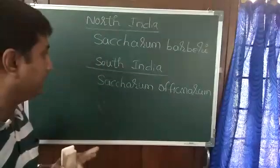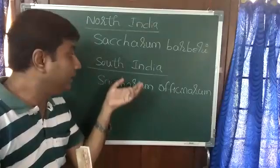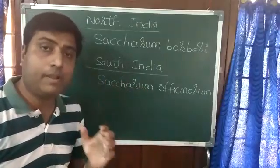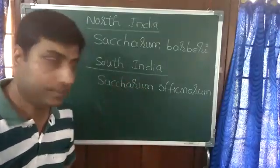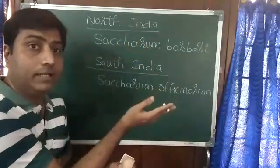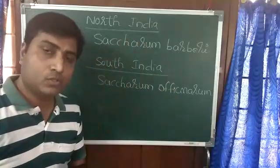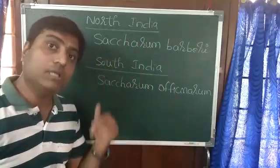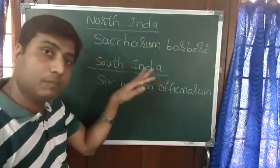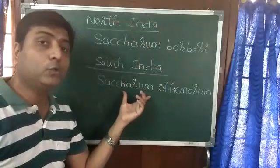In South India, the species was Saccharum officinarum, which had thick stems and high sugar content. Whereas in North India, the sugarcane could grow very well but the sugar content was very less. So the farmers of North India tried Saccharum officinarum from South India in their region, but it could not grow there because it was not adapted to that climate.